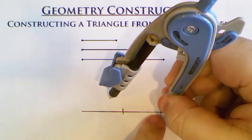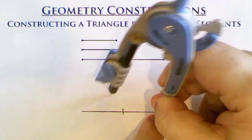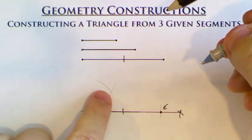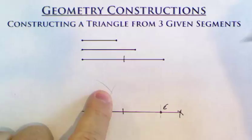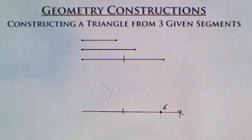I'm going to attach it to this side of my triangle. And it's going to intersect where the other one was. That is the third point to my triangle.